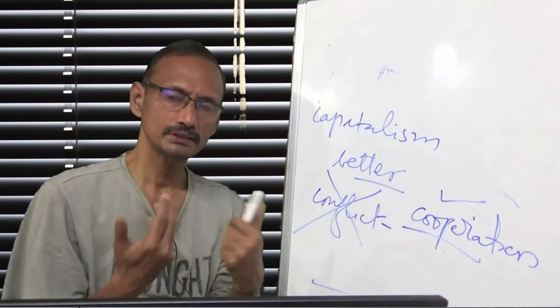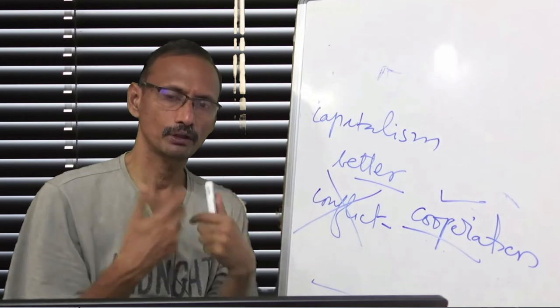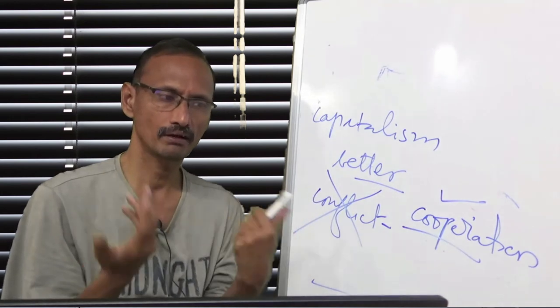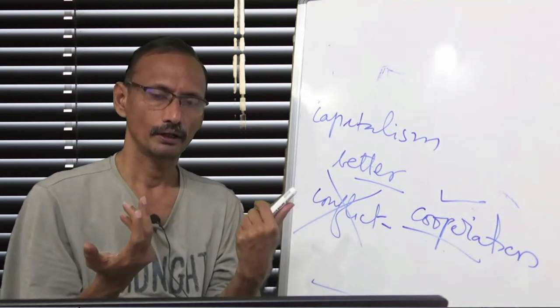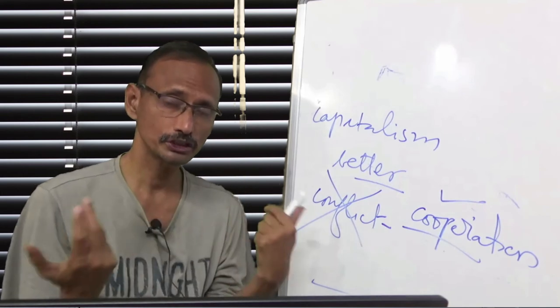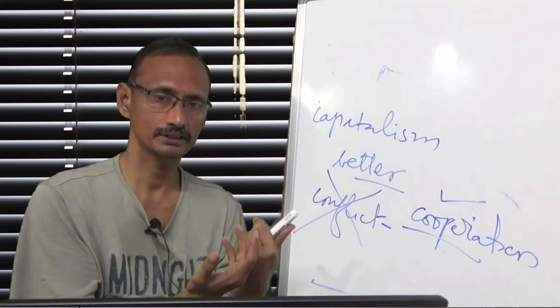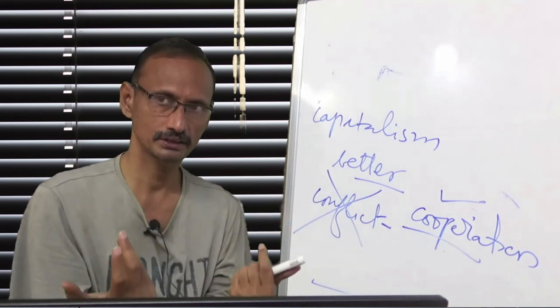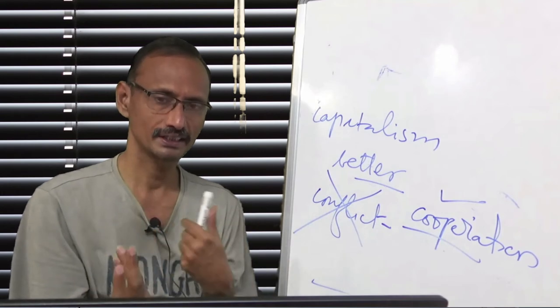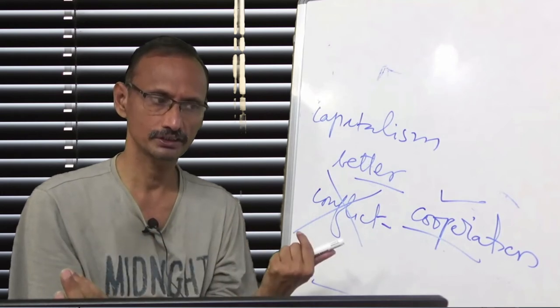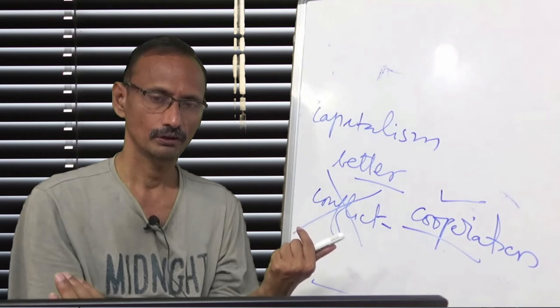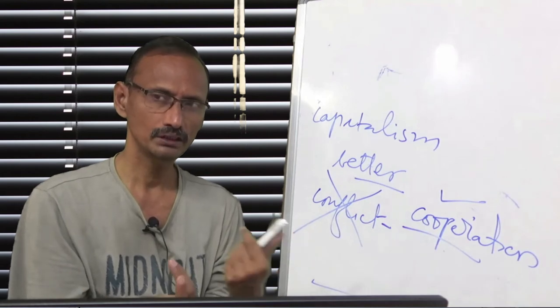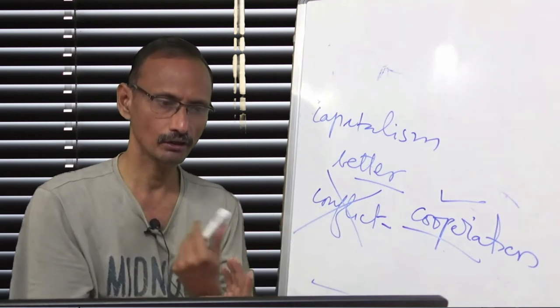So capitalism is improving, people are cooperating, everybody is better off. And there is a negotiation between the workers and the capitalists. Workers are demanding certain things. Capitalists are listening and improving their working conditions. So it means cooperation and dialogue is possible.